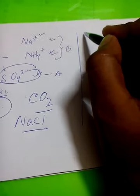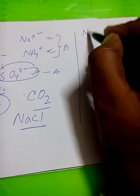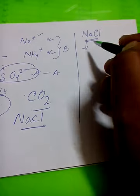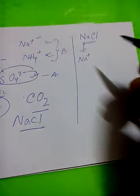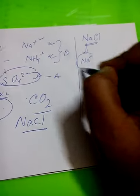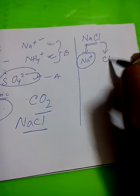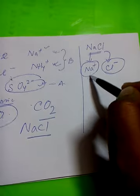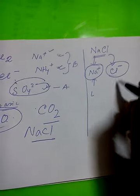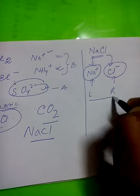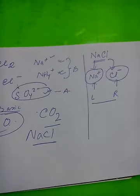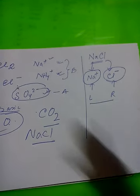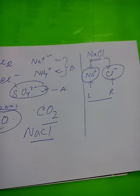For example, in sodium chloride NaCl — what is the charge on sodium? It is positive. What is the charge on Cl? Minus. The positive charge is placed on the left-hand side, and the negative charge on the right-hand side. This is the rule: whenever we write any chemical formula, we write the positive charge on the left and negative charge on the right.